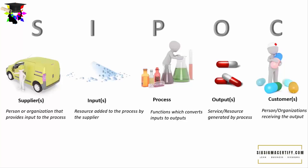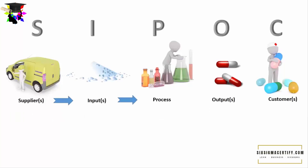So this is what SIPOC means: Suppliers, Inputs, Processes, Outputs, and Customers. The suppliers provide the raw material — there may be different suppliers for different raw materials or different inputs. These inputs or raw materials go to the process. There might be different steps or different ways to convert the input to the output. In the processing function, we add value to the products or services — so these are the value-adding activities.